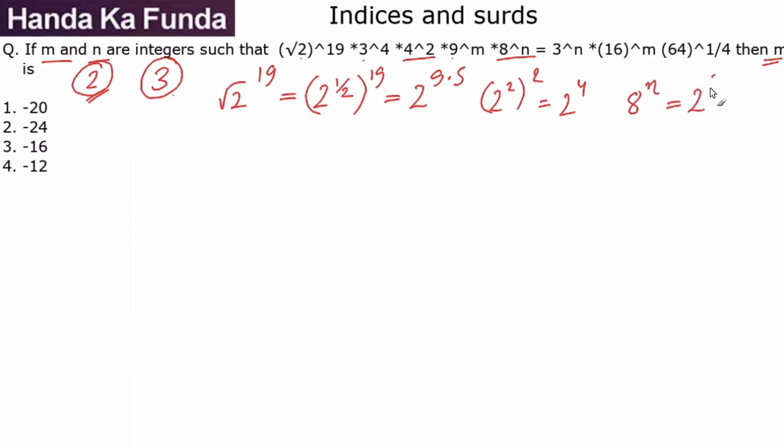What do I have on the right-hand side? I have 16 to the power of m, which is 16 is 2 to the power of 4 to the power of m, which is 2 to the power of 4m.